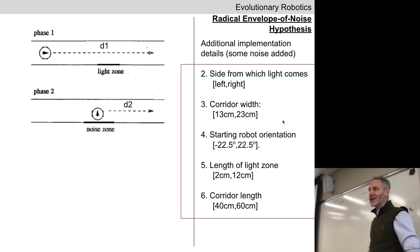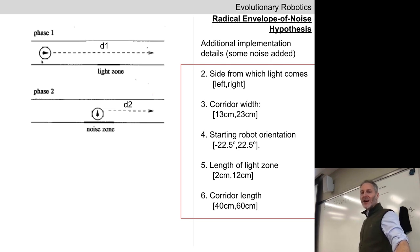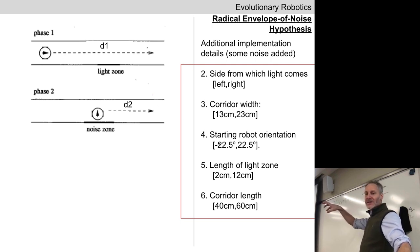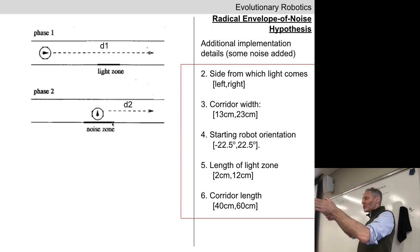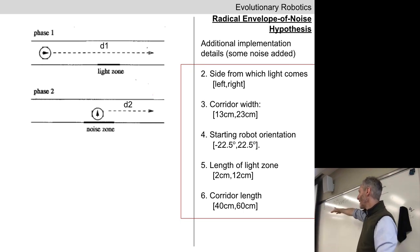This researcher set a good precedent by being paranoid: assume that everything can possibly go wrong in reality. So every time they ran the robot through the simulator, they altered the side from which the light comes — an important thing for the experiment. They varied the width of the corridor, the starting orientation of the robot in the base of the T-maze, the length of the light zone, the length of the corridor. When they say they varied all these things, they went back to those three lookup tables — for movement, IR sensors, and light sensors — and modified things in those tables to simulate varying these aspects of the robot in reality.